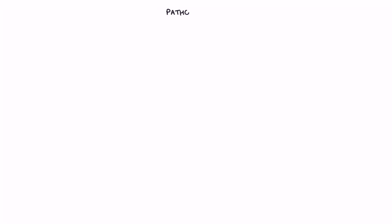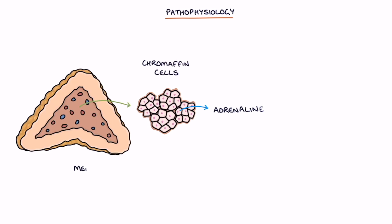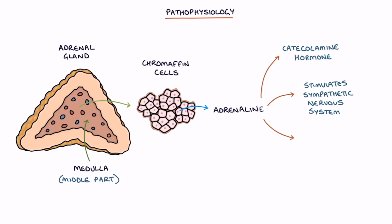Let's talk about the pathophysiology. Adrenaline is produced in the chromaffin cells in the medulla or middle part of the adrenal glands. Adrenaline is a catecholamine hormone that stimulates the sympathetic nervous system and is responsible for the fight-or-flight response that occurs with danger.